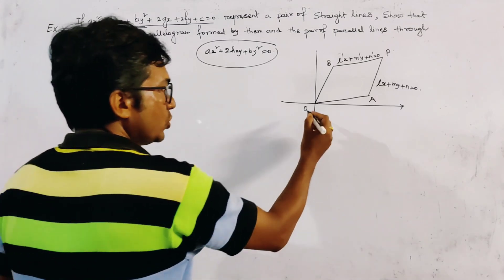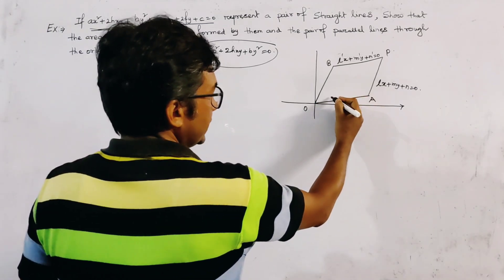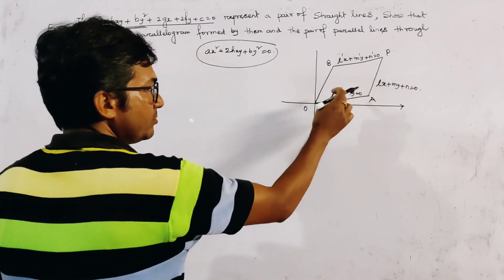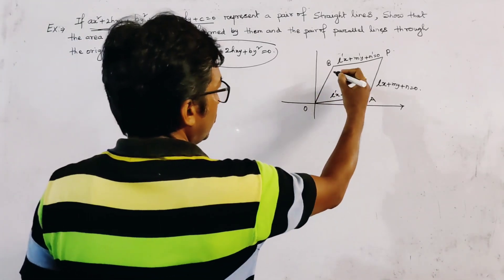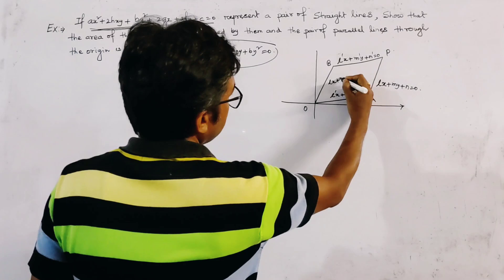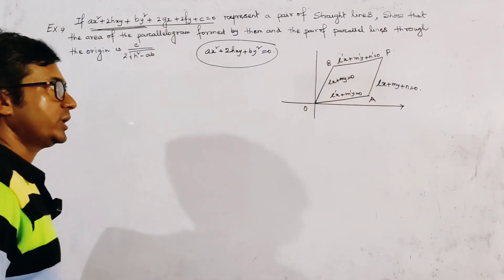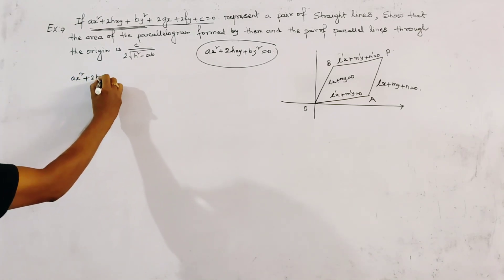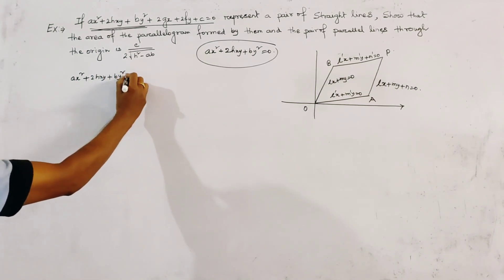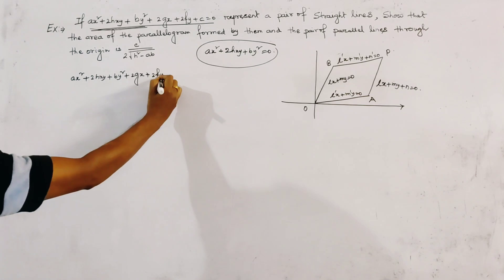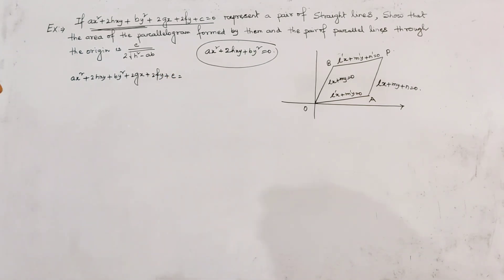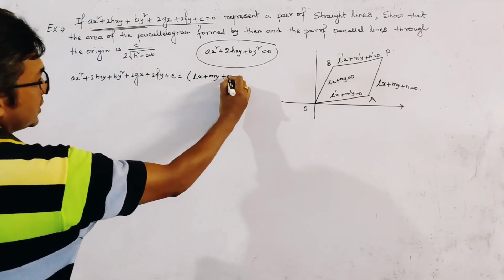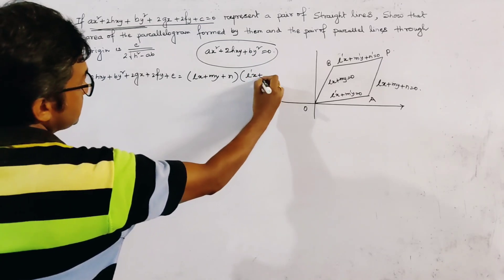For lines parallel to the given lines but passing through the origin, the equation of OA must be l'x + m'y = 0 (no constant term since it passes through the origin), and similarly OB is given by lx + my = 0. We then write the general equation ax² + 2hxy + by² + 2gx + 2fy + c as the product (lx + my + n)(l'x + m'y + n').